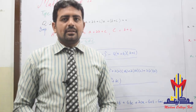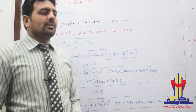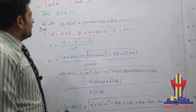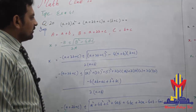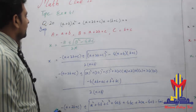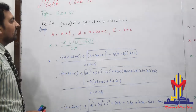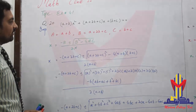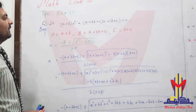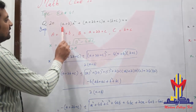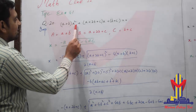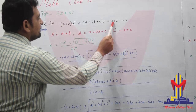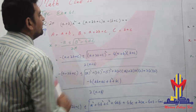Assalamualaikum students. Today we will start question number 4.1, exercise 20. The important question is: Solve by quadratic formula. The given equation is (A+B)x² + (A+2B+C)x + (B+C) = 0.